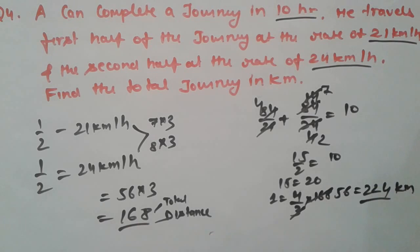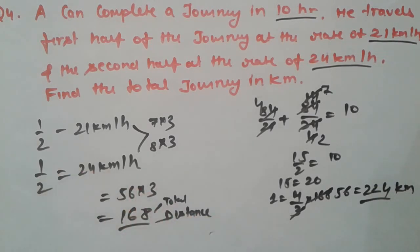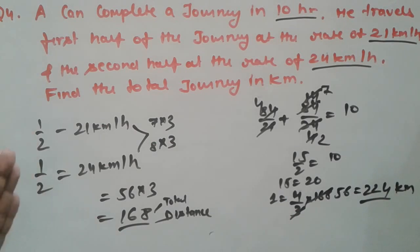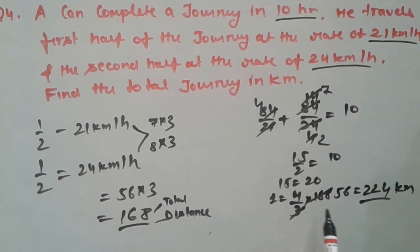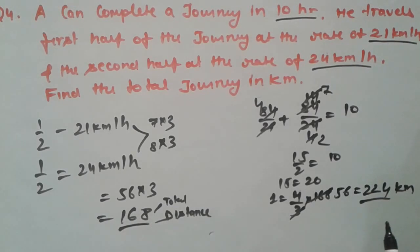He travels the first half at 21 km/h and the remaining half at 24 km/h, taking a total time of 10 hours. We assumed the total distance using the LCM of the speeds, found 1 unit equals 4/3, and so 168 units equals 224 km. That is the final answer. Let's move to the last question.